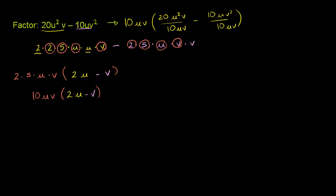This expression and this are obviously the same thing. If I were to distribute the 10uv, it would cancel out with each of these in the denominator right there. So they're the same thing, but what we can do is we can simplify this.